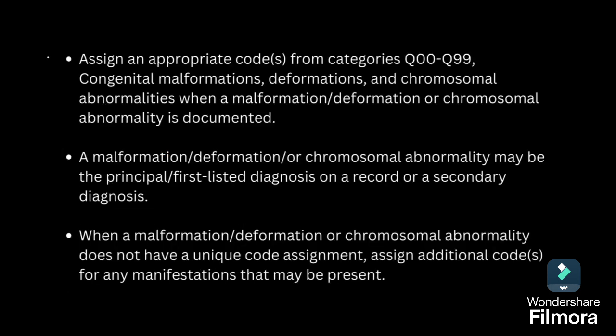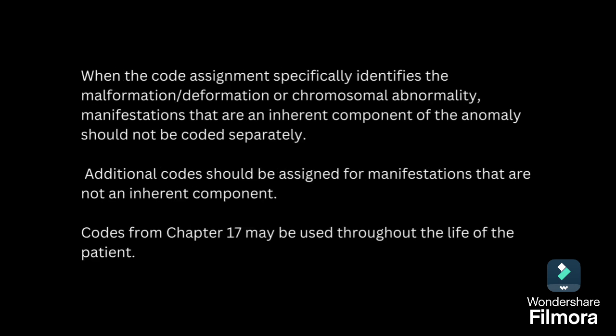Assign an appropriate code from category Q00-Q99 for congenital malformation, deformation and chromosomal abnormalities. A malformation, deformation or chromosomal abnormality in the Q series can be a principal diagnosis or a secondary diagnosis. When we don't have a unique code for the Q series, we can code for the manifestation.